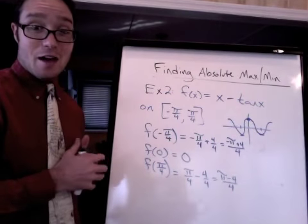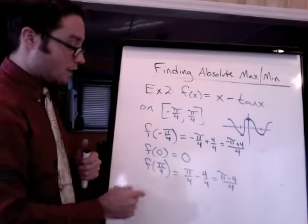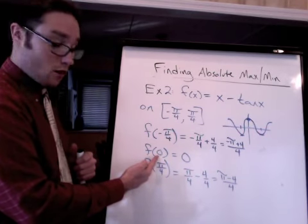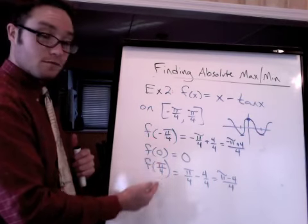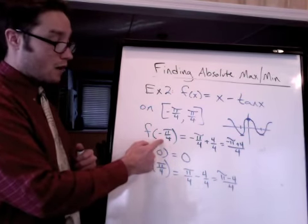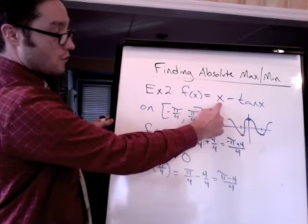So the second step is we plug in our stationary point, which we just got, x equals 0. And then we plug in the endpoints of the interval. And you don't need to plug in anything outside of that interval.